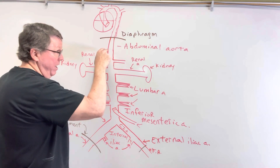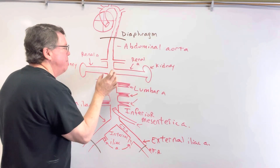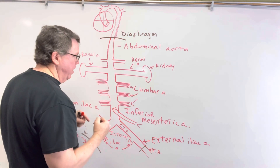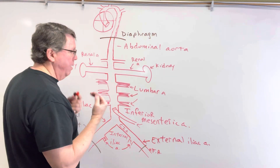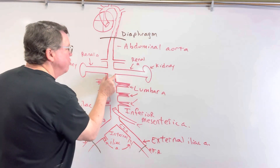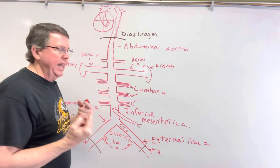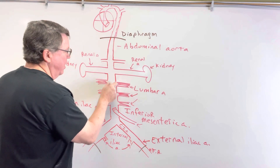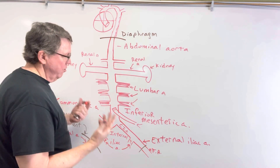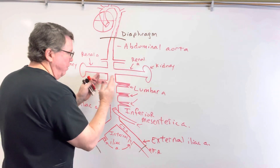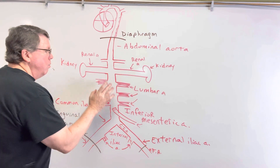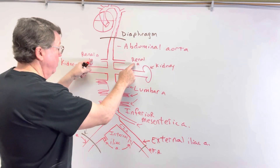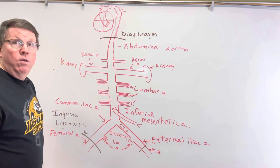About 60% of aneurysms happen in the abdominal aorta. Of those, about 80% occur below the renal arteries — we call this the infrarenal abdominal aorta. This is because the walls get thinner and less elastic as a person ages, elastic fibers break down, and atherosclerosis weakens the walls by blocking blood flow to the aortic wall, causing it to enlarge.